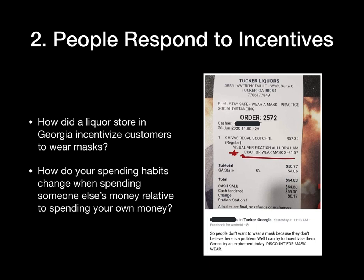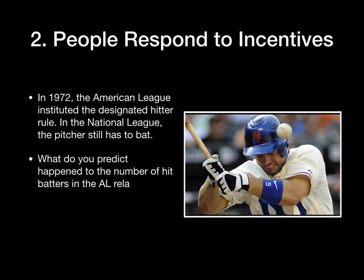Spending habits also change when you're spending somebody else's money versus your own — your incentives change. Another example: in 1972, the American League instituted the designated hitter rule, where a pitcher does not go up to bat — they designate another player to hit in the pitcher's spot. What do you predict happened to the number of hit batters in the American League relative to the National League after 1972? The National League continued with the pitcher batting. Sure enough, the number of batters hit in the American League increased by 20% relative to the National League.